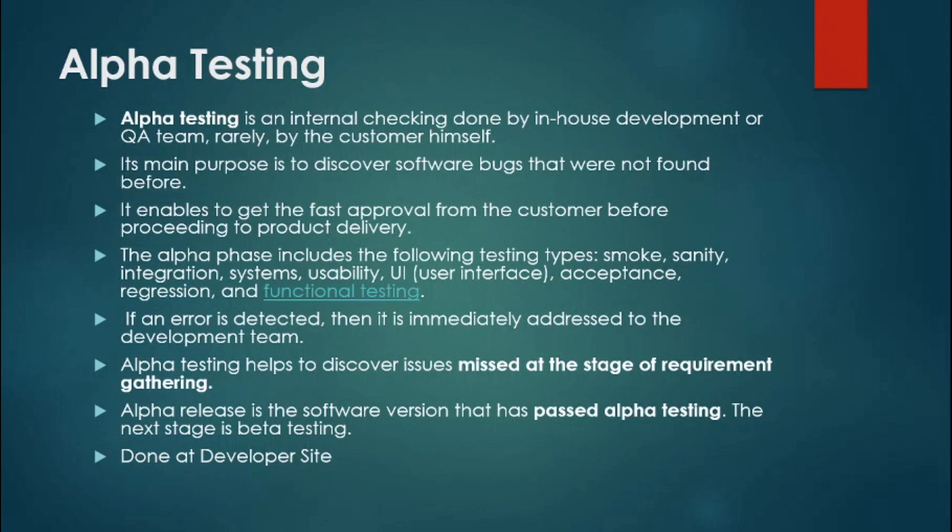The alpha release is the version of software that has passed alpha testing. Once the software has passed the alpha testing phase, it is called an alpha release. Most importantly, alpha testing is done at the developer site.